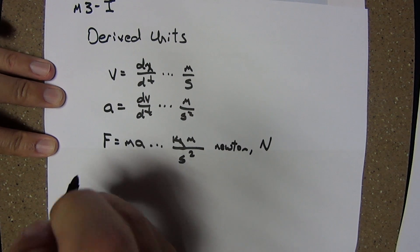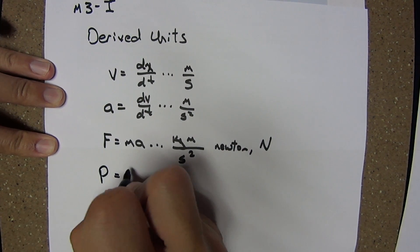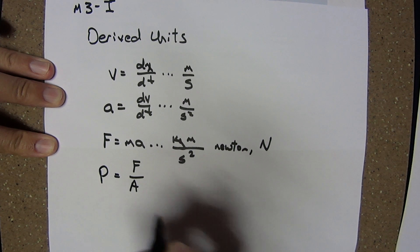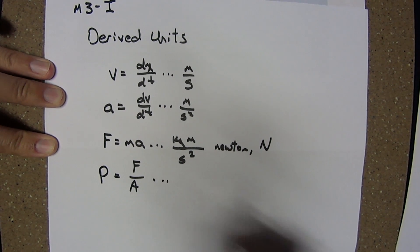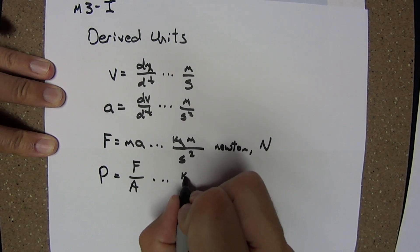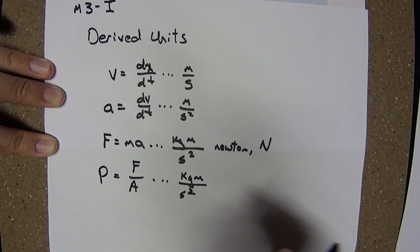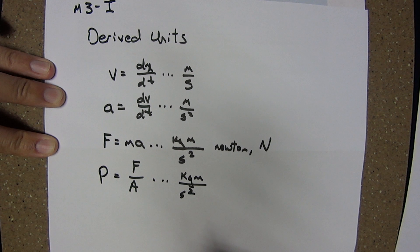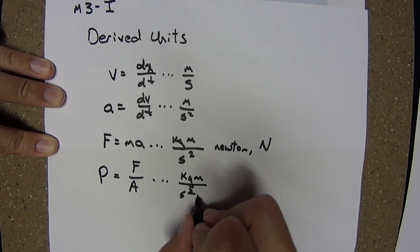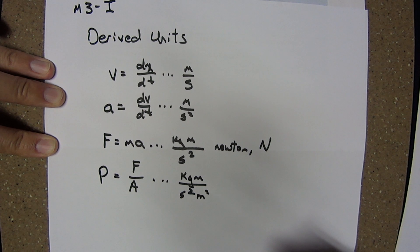And finally, pressure is defined as a force per unit area. Force, we've already seen. Kilogram, meter, per second squared. Area itself is a derived unit, a square length, or meter squared.